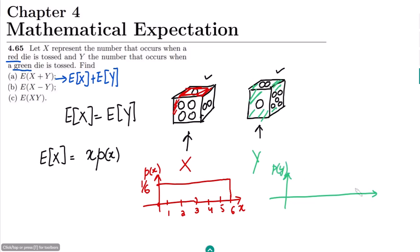For Y, the table shows P of y versus y, with values 1, 2, 3, 4, 5, 6. Each and every item here will have the same probability of 1/6.